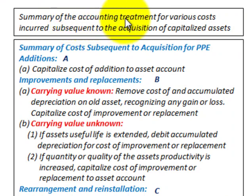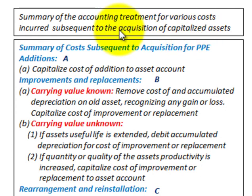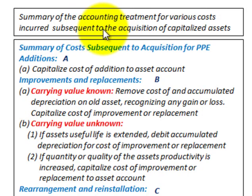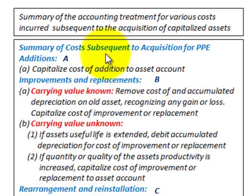What we're going to be looking at here is a summary of the accounting treatment for various costs incurred subsequent to the acquisition of capitalized assets — specifically property, plant and equipment. By 'subsequent to the acquisition,' we mean once the plant gets running and in normal operation, these are the costs that may be incurred after the startup is completed.